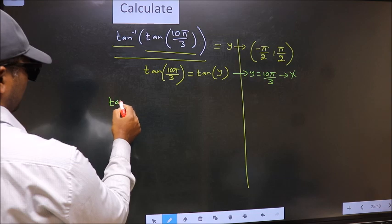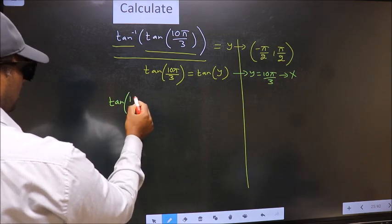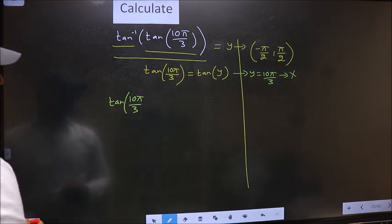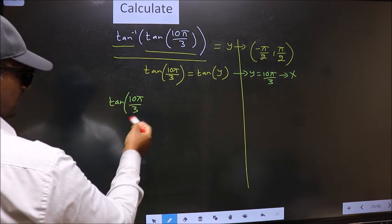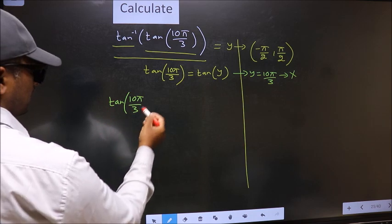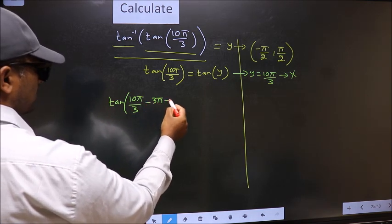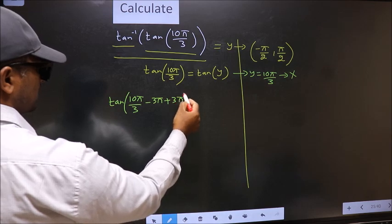Next, tan(10π/3) is exceeding that interval, so we should decrease it. To decrease it, I subtract 3π. Now whatever we are subtracting, we should also add the same thing.